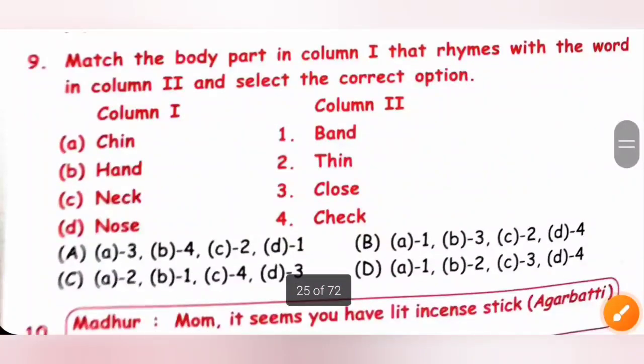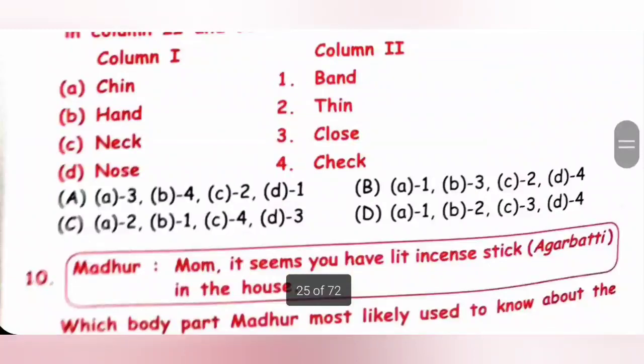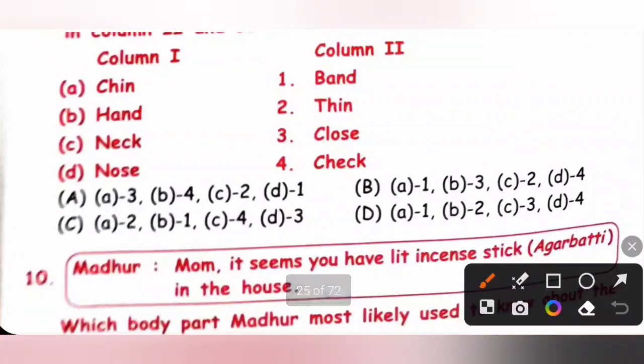Ninth one. Match the body part in column 1 that rhymes with the word in column 2 and select the correct option. So, chin, thin, hand, band, neck, check, nose, close. So, A2. A2 means option C. A2, B1, C4 and D3. Option C is the correct answer.